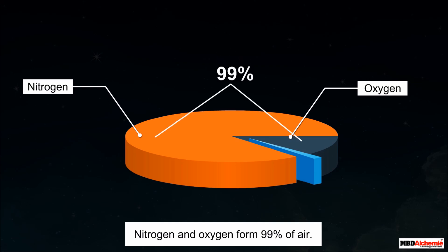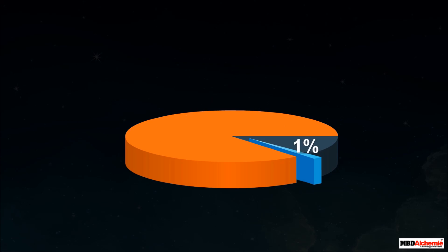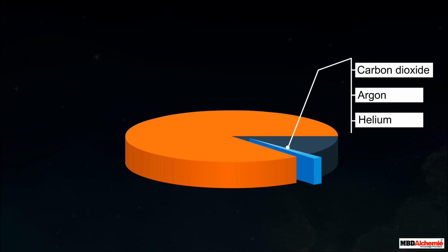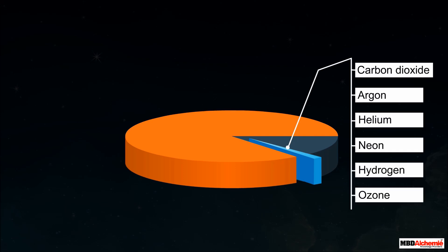The remaining 1% of air consists of several gases including carbon dioxide, argon, helium, neon, hydrogen, ozone, and water vapor.